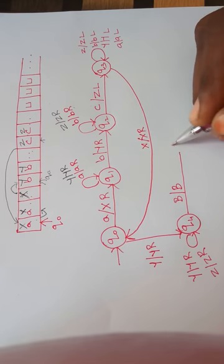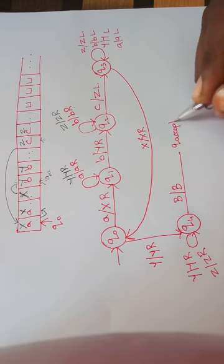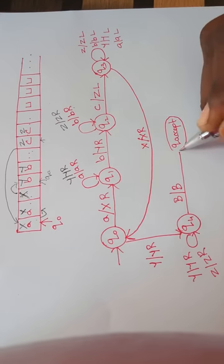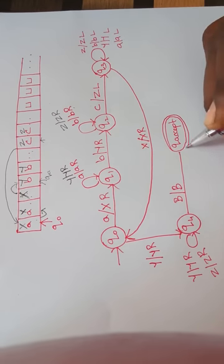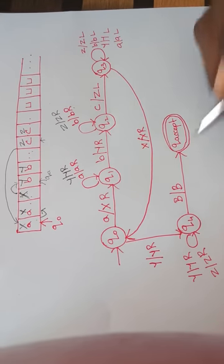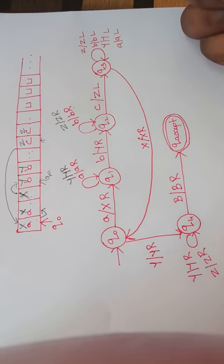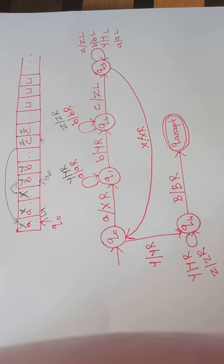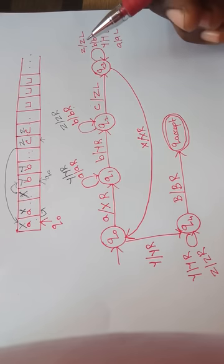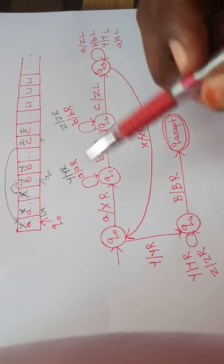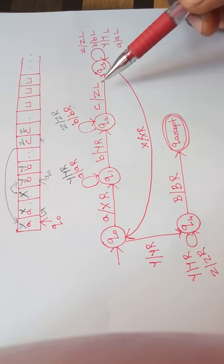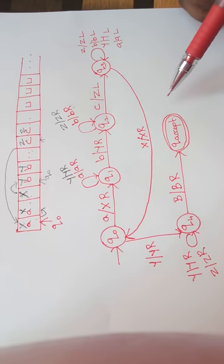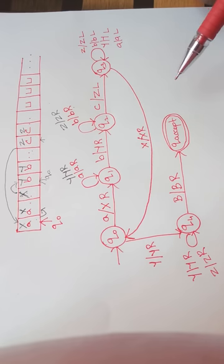Finally, if we reach the blank symbol in Q4 it means that all inputs are cancelled — the tape only has X, Y, Z — which is the condition where we have equal numbers of A, B, and C. When we reach the blank symbol we go to the Q_accept state. Q_accept is the final state; whenever the input is correct and proper we go to this accepting state. This is the Turing machine that works when the input contains equal numbers of A, B, and C.